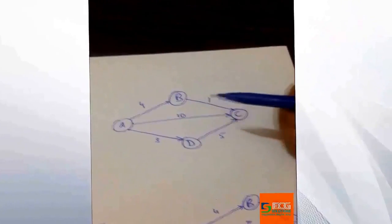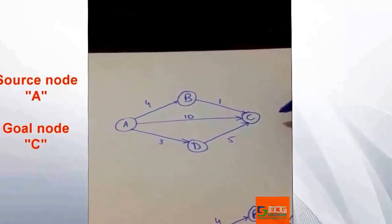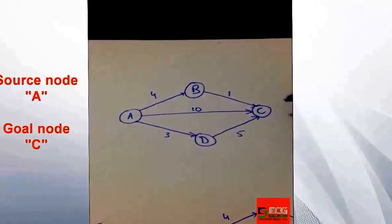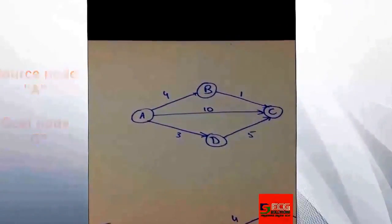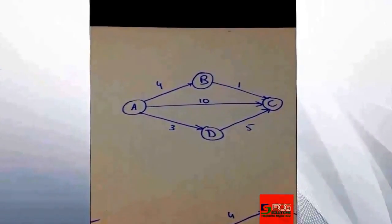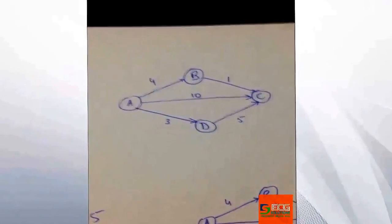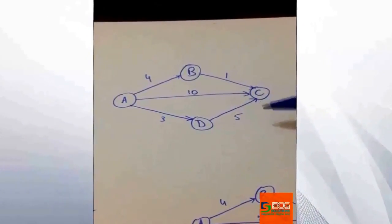We need to move from point A to C, and the distance is given in kilometers: 4, 3, 10, 1, and 5. Our source node is A and we need to reach the destination which is node C.